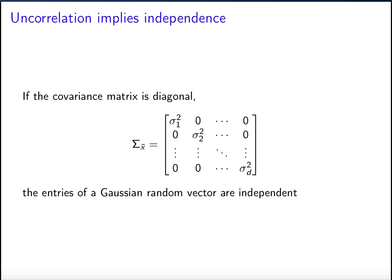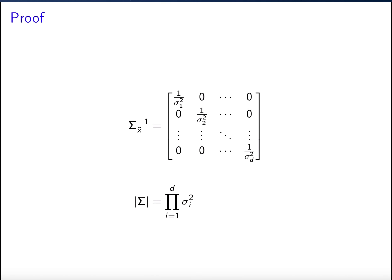Now let's see what happens if the entries of the Gaussian random vector are uncorrelated. The covariance matrix has variances on the diagonal and covariances on the off-diagonal. If all entries are uncorrelated, then the off-diagonal elements are all zero. For a Gaussian random vector, uncorrelated entries are actually independent — not just uncorrelated. This only holds for Gaussian random vectors, since we have already shown examples where uncorrelation does not imply independence.